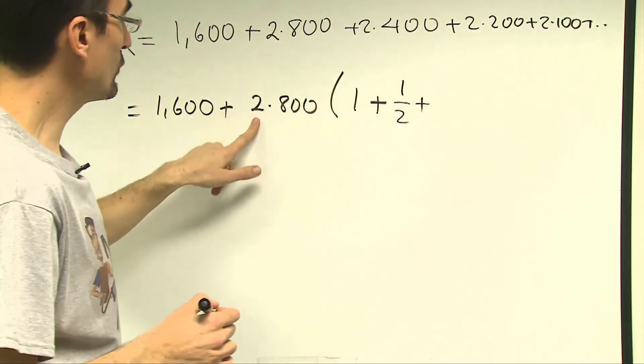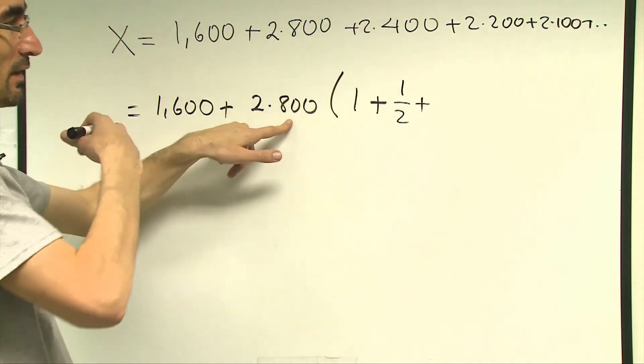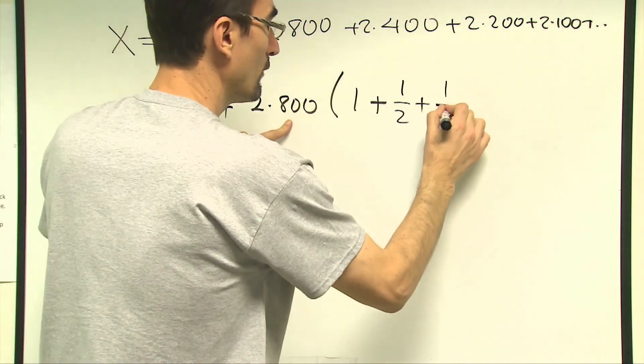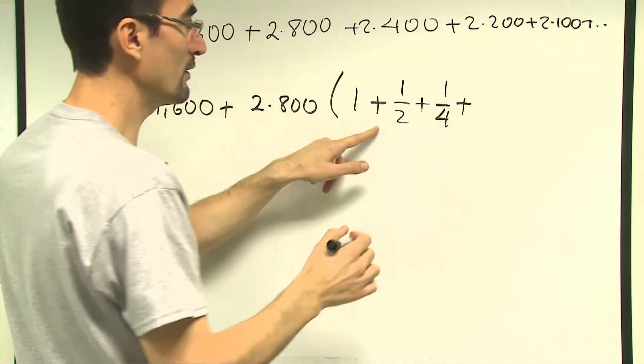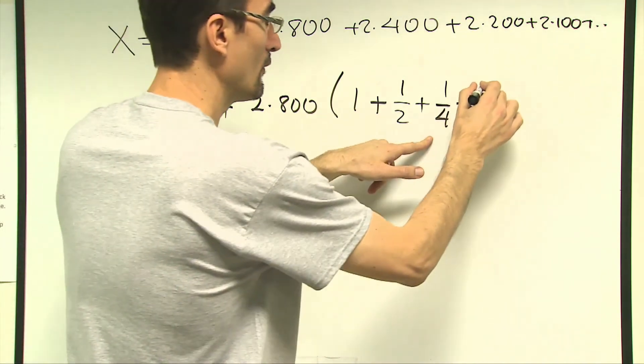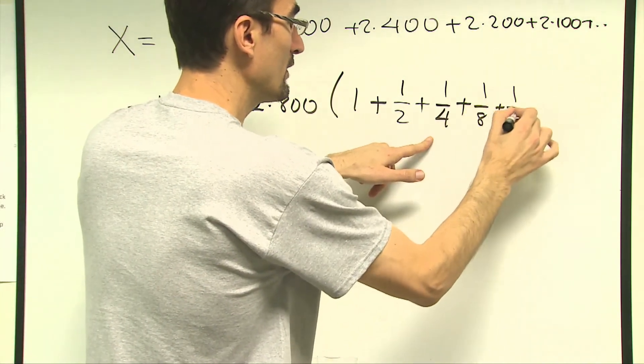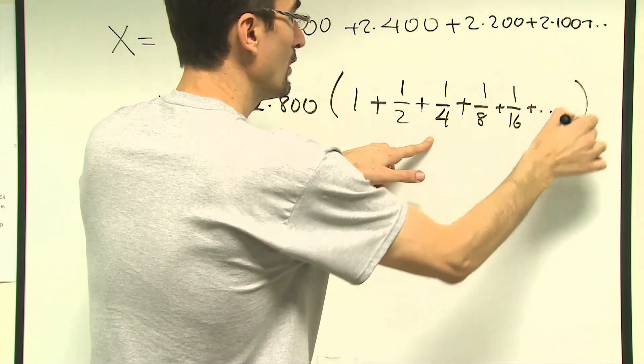And then as you see the pattern develops to be 1 over 8, 1 over 16 and so on.